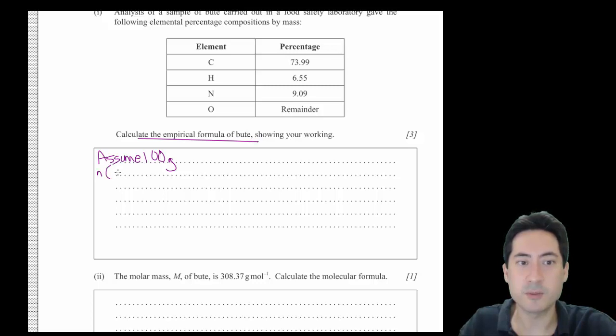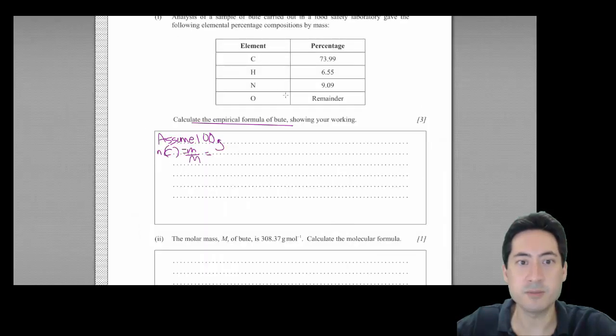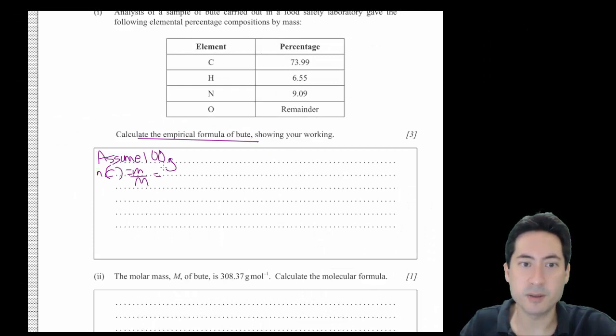To work out the empirical formula, we have to work out the number of moles to write the formula. The number of moles of carbon is mass on molar mass. For all of these, I need to use the data booklet to work out what these numbers are. We've got 73.99 grams, so I write 73.99 divided by 12.01. That gives us 6.16 moles. I have to do the same thing for the rest of them.